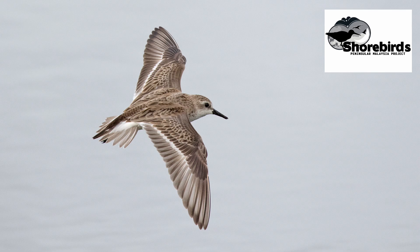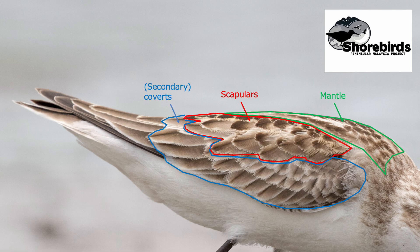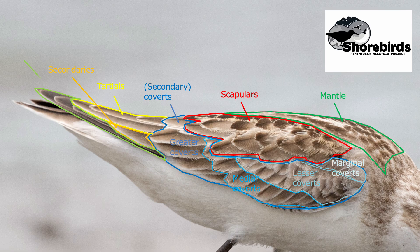We can use our labelled bird from the last video as our starting point, as we'll be looking at many of the same feather tracks. So first, a quick review of the upper parts: starting with the mantle, then the scapulars, the secondary wing coverts which include the marginal, lesser, median and greater coverts, followed by the flight feathers — the tertials, the secondaries, the primaries — and finally the tail.